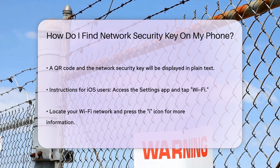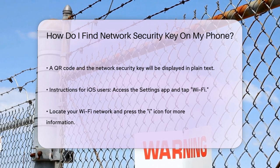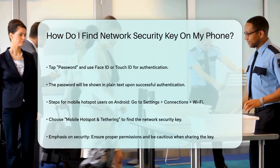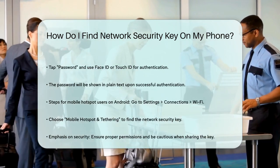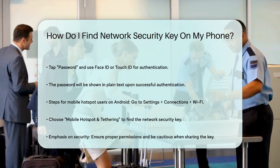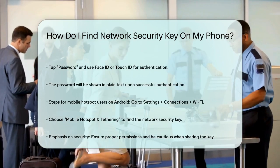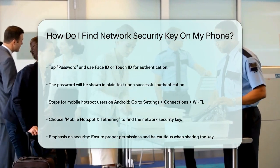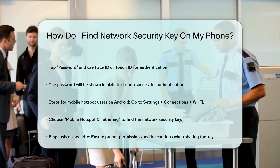If you're using a mobile hotspot on your Android device, you'll need to go to Settings, Connections, Wi-Fi, then choose Mobile Hotspot and Tethering instead of Wi-Fi. Turn on your mobile hotspot and tap on Mobile Hotspot. You'll see your mobile hotspot information, including your network security key, in the next window.